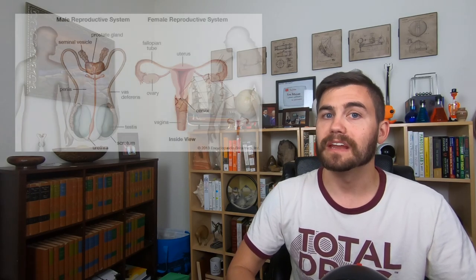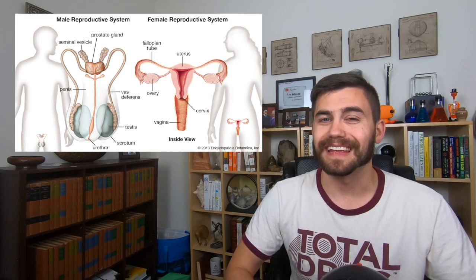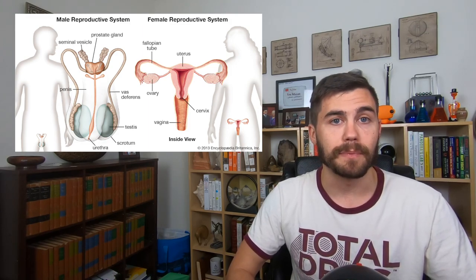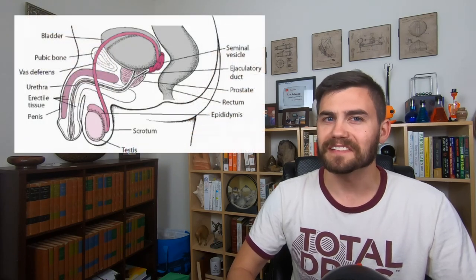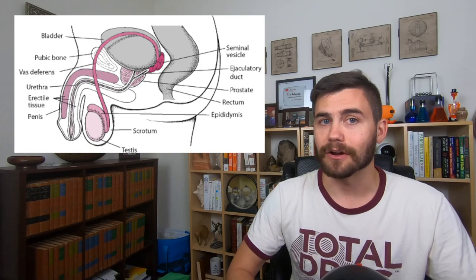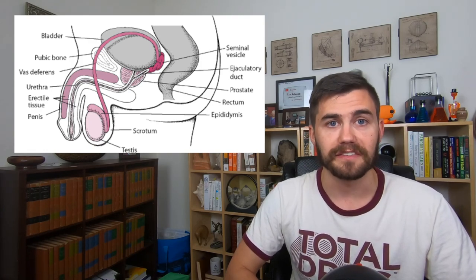The activation of the SRY gene causes all kinds of changes, including the movement of the gonads from inside the body to outside the body. In females, the ovaries are stored inside the body, but in males, the testes are stored outside the body in the scrotum. The testes end up perforating the abdominal wall in order to get there, which is why males are more susceptible to hernias.